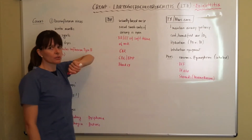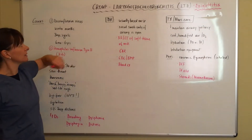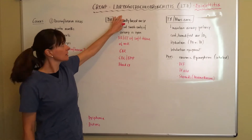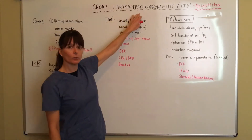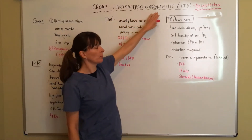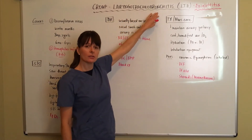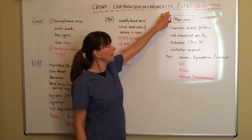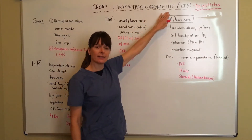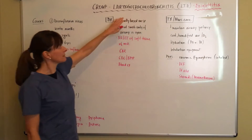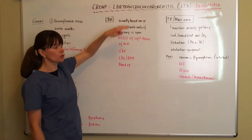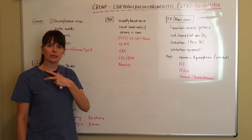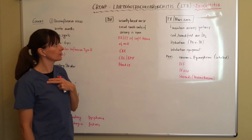Just think about what this means. Laryngo pertains to the larynx, tracheal pertains to the trachea, bronchioles refers to the bronchioles, and itis means inflammation. So this is basically inflammation of the upper airway — the larynx, trachea, and upper airway bronchioles.